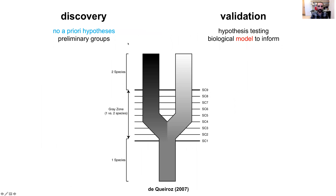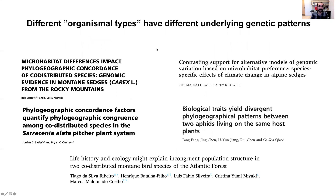Species delimitation in general includes two types of analyses: discovery and validation. Discovery-based analyses do not require a priori hypotheses before the analysis, and the purpose of this phase is to identify preliminary groups that serve as species-level hypotheses that are then tested in the validation phase. Validation-based analyses rely on some biological model to inform species limits.